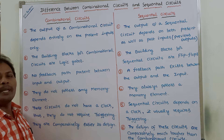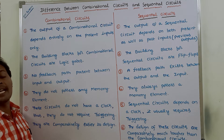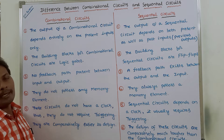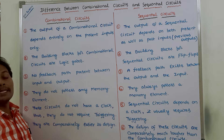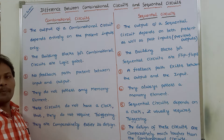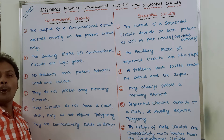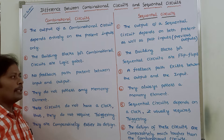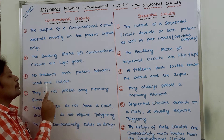The second point: the building blocks for combinational circuits are logic gates. To construct any combinational circuit, the basic building blocks are logic gates such as AND gate, OR gate, and NOT gate. Whereas for sequential circuits, the basic building blocks are flip-flops. A flip-flop is a storage element used for storing one bit of information.